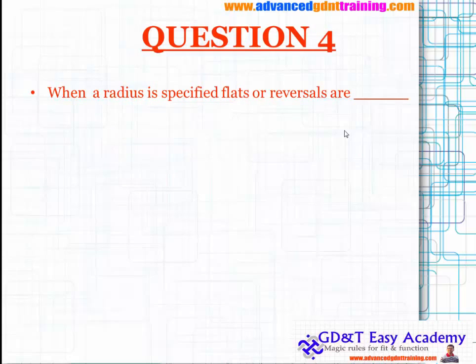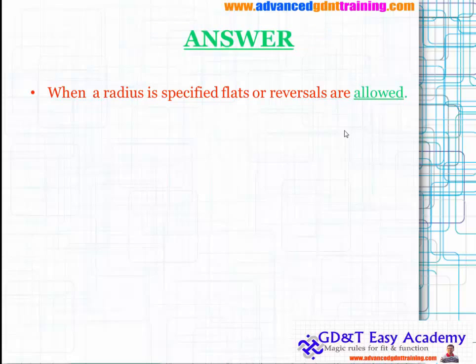Question four: when a radius is specified, flaws or reversals are allowed. However, when you have a controlled radius (CR), you cannot have a flaw or reversal within the controlled radius zone.